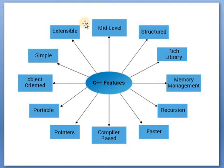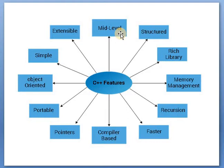Next is extensible. As it is object oriented programming, the program is divided into modules. Adding any new object or module is easy in C++. Extensible means it can easily add new features. Next is mid-level: C++ has features of both low-level programming and high-level programming, so it is called a mid-level language.